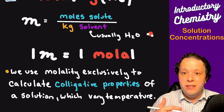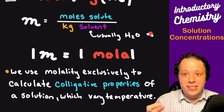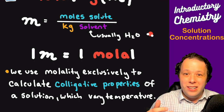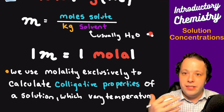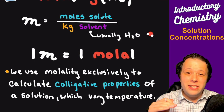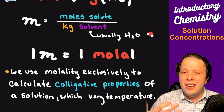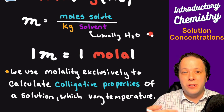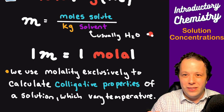Since volume can change, we use molality because it circumvents the reliability on volume — it goes purely off masses, which will not change with conditions. Molality is also somewhat of an older term, used more when central air conditioning and cooling weren't as readily available, so you'll see it getting phased out. But it's still heavily used when referring to colligative properties, which is how a solute changes things like boiling point, freezing point, and osmosis.